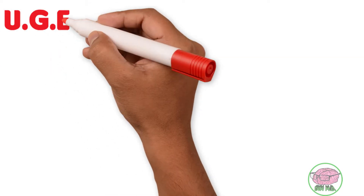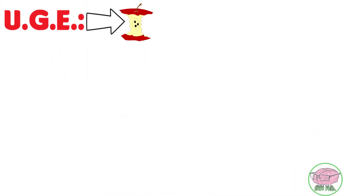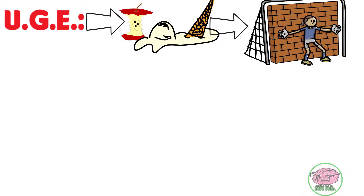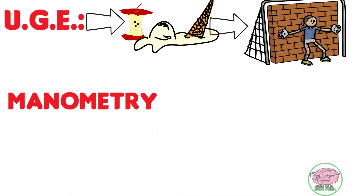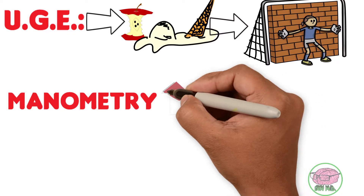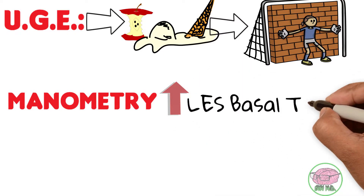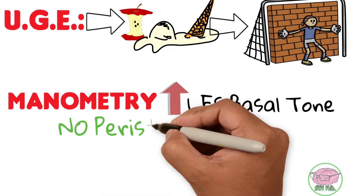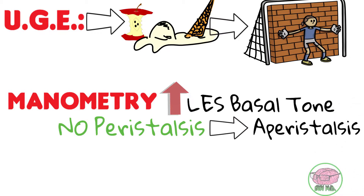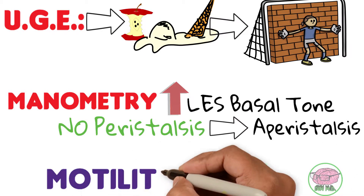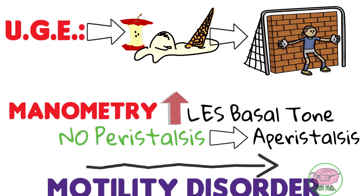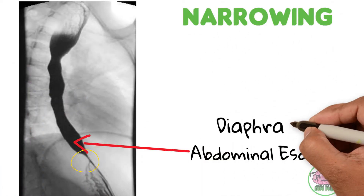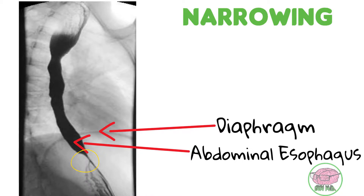This upper GI endoscopy shows food remains within the esophagus, which contributes to our theory of an esophageal obstruction. Juan's manometry, used to measure esophageal pressures, shows an increased basal tone of the lower esophageal sphincter, as well as an absence of esophageal movement known as peristalsis — this indicates a motility disorder of the esophagus. Furthermore, the esophagogram shows a narrowing in the abdominal esophagus.